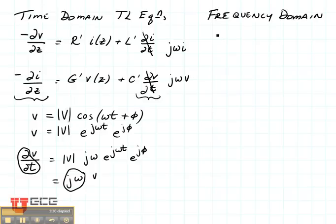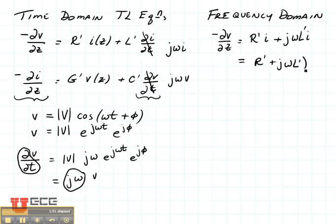Right here we'll have minus dv/dz equals r' times i plus j omega L' times i. If we combine these two terms, that's r' plus j omega L' times i.